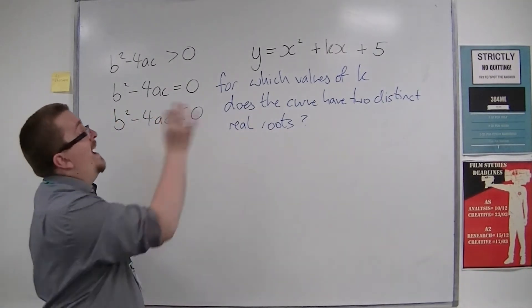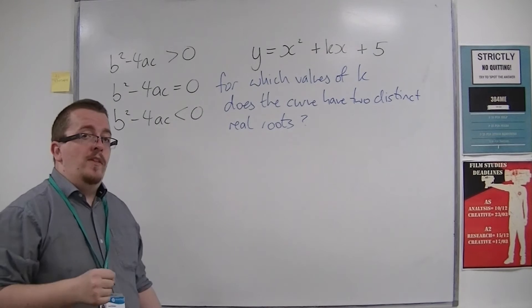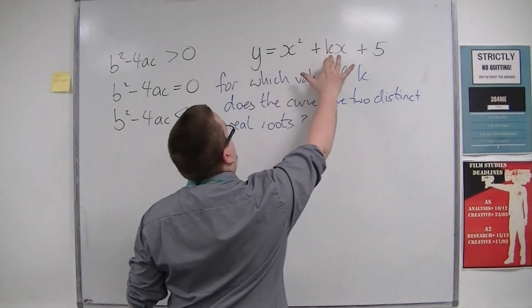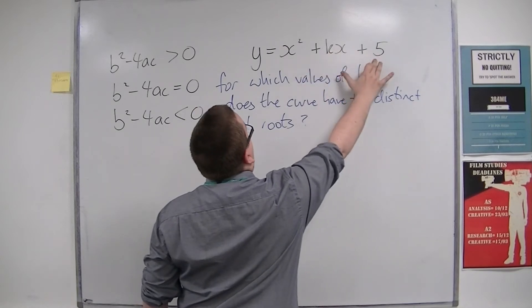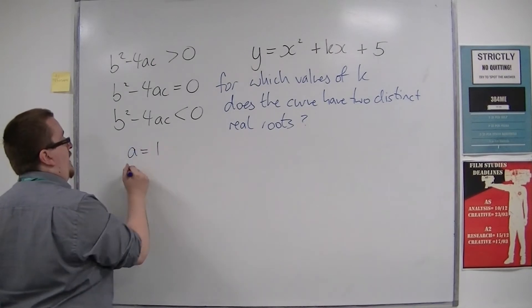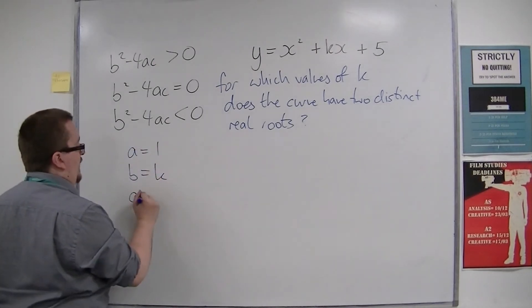We can identify the a, the b, and the c from that quadratic. The a would be 1, the b would be k, and the c would be 5.